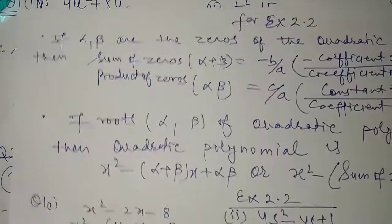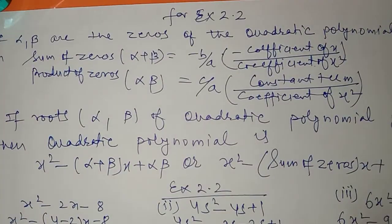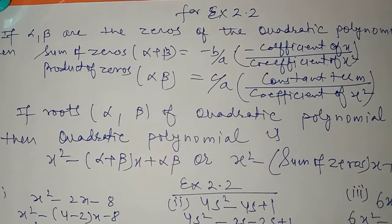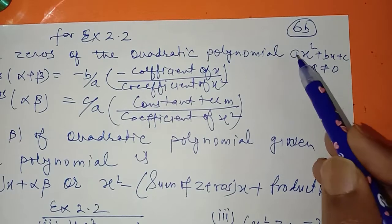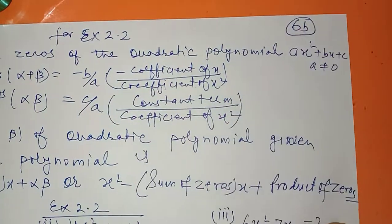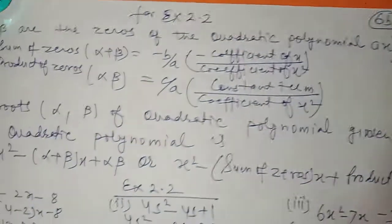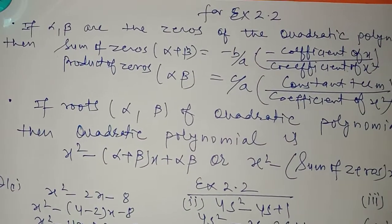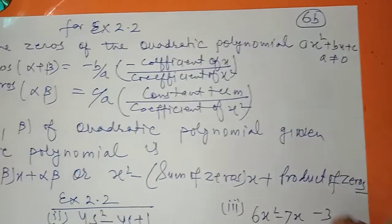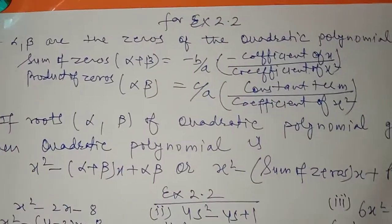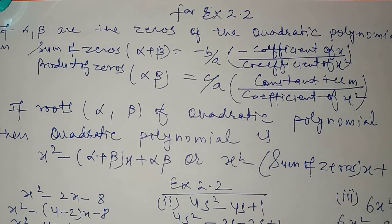Now the next topic is the quadratic polynomial. The quadratic polynomial means ax squared plus bx plus c, where a will not be equal to zero. If a is zero, the term will not be quadratic. For a quadratic polynomial you must have the x squared term. A quadratic polynomial is one which has degree two — the degree is the highest power. The number of zeros of a polynomial corresponds to its degree: degree one gives one zero, degree two gives two zeros, degree three gives three zeros.